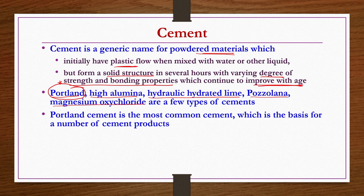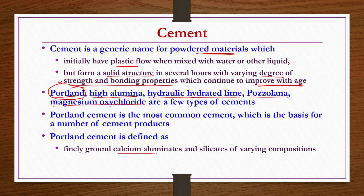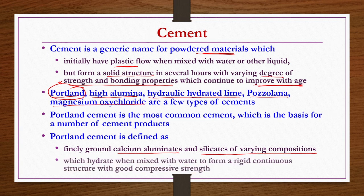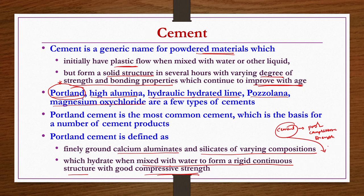Portland cement is the most common cement, the basis for a number of cement products. It is defined as finely ground calcium aluminates and silicates of varying compositions, which hydrate when mixed with water to form a rigid continuous structure with good compressive strength. Cement individually has poor compressive strength, but when mixed with water, sand and gravel, its compressive strength increases drastically, providing the required strength for construction.